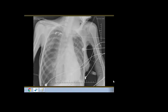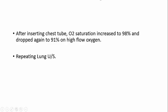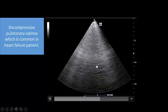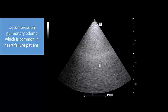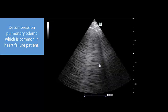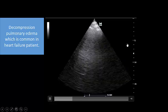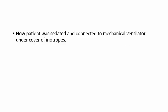Here is the patient's lung with pneumothorax, and here is the chest tube after insertion. After inserting the chest tube, oxygen saturation increased to 98% — a significant improvement. However, saturation then dropped again to 91% on high-flow oxygen. On repeat lung ultrasound before intubation, we found B-lines indicating pulmonary edema — re-expansion pulmonary edema occurred because the patient had heart failure, and decompression of the pleura can increase hydrostatic pressure. At this point, it was the appropriate and safe time to start mechanical ventilation. We sedated the patient, connected to mechanical ventilation with a chest tube in place, and there were no hemodynamic complications during intubation.